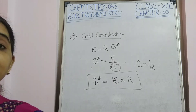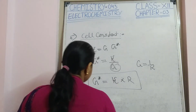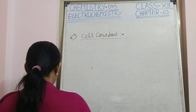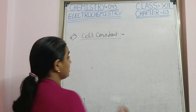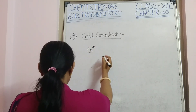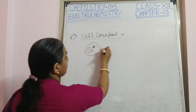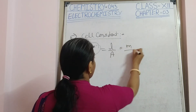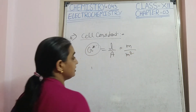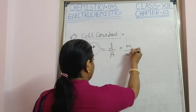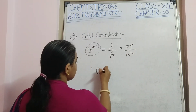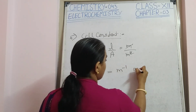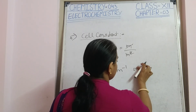The unit of the cell constant G* is found from G* = L/A. Since L is in meters (or cm) and A is in meters squared (or cm²), the unit of G* is meter⁻¹ or centimeter⁻¹. Thank you very much.